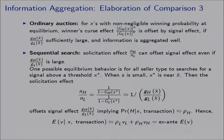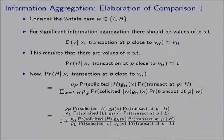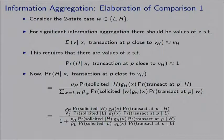This means the probability of state H conditional on signal X in a transaction is just the prior probability — the signal and solicitation likelihood ratios cancel, leaving only the prior. So the expected value for a buyer, given that they are transacting, coincides with the ex ante expected value. This explains why prices can contain no information in sequential search.